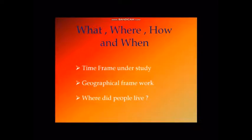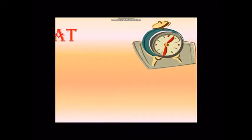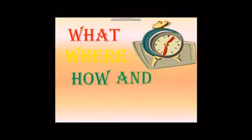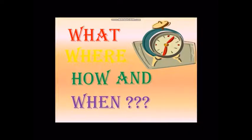In this module we will learn about the time frame under study, geographic framework, and where did people live. In the chapter, 'What' refers to the sources of history that help us in knowing the past. 'Where' indicates the places inhabited by early man. 'How' refers to the different means through which we can know about our past, and 'When' refers to the time frame under the study of history.